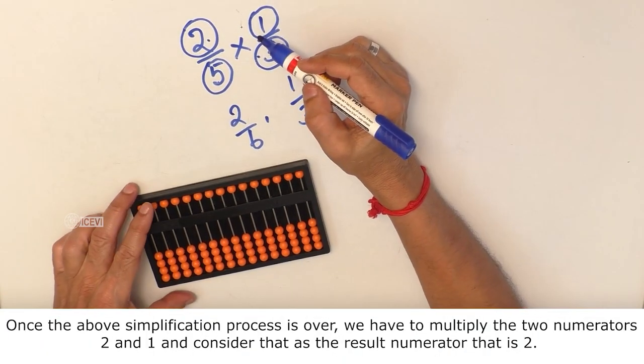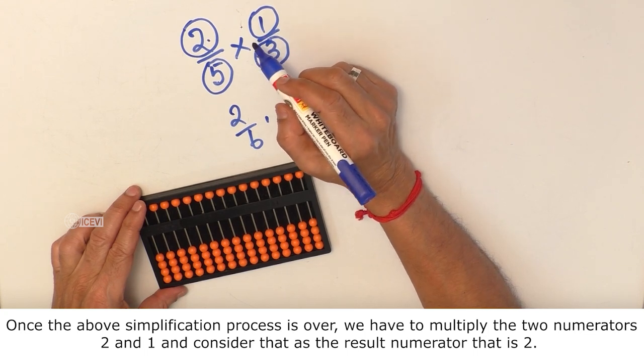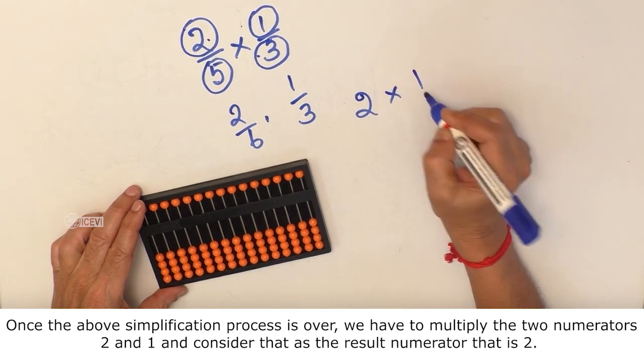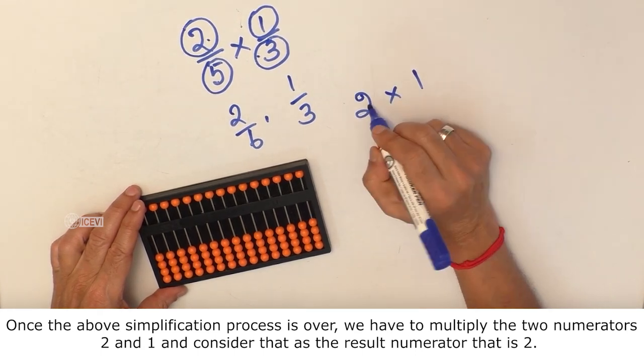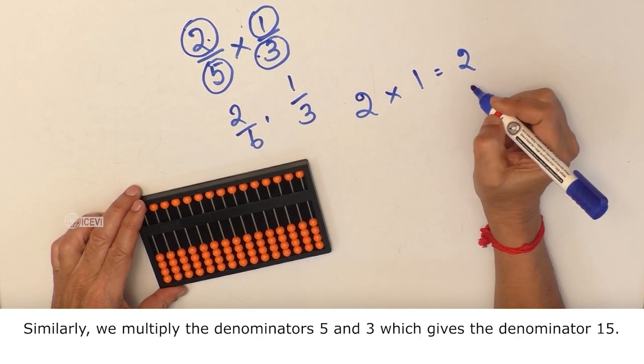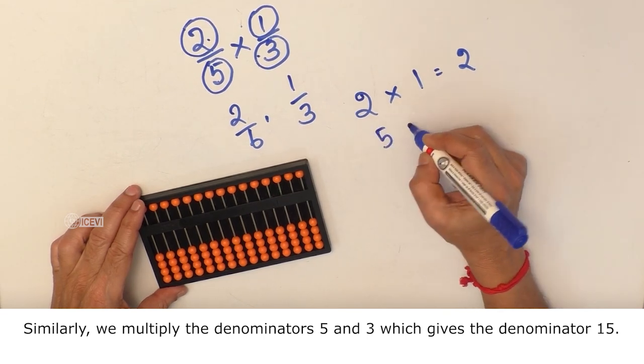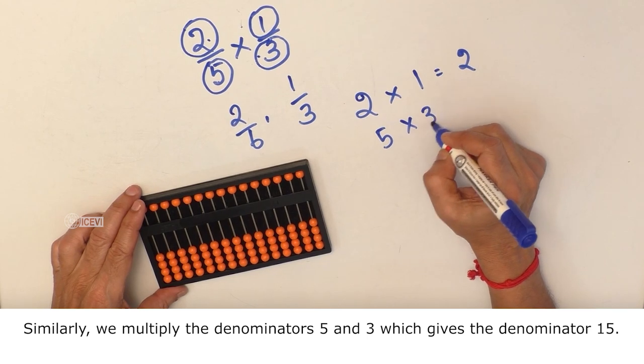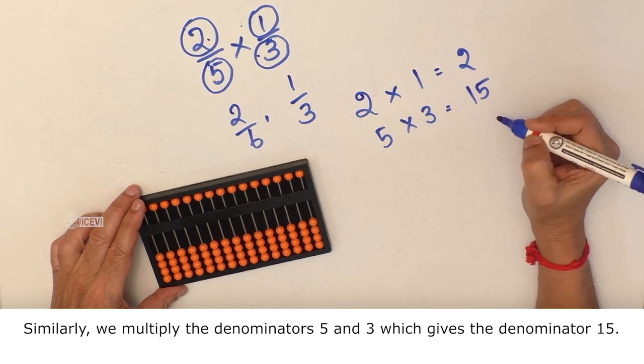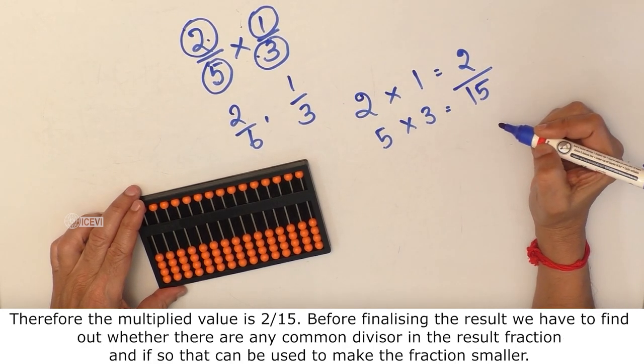Once the simplification process is over, we have to multiply the two numerators, 2 and 1, and consider that as the result numerator, that is 2. Similarly, we multiply the denominators, 5 and 3, which gives the denominator 15. Therefore, the multiplied value is 2 by 15.